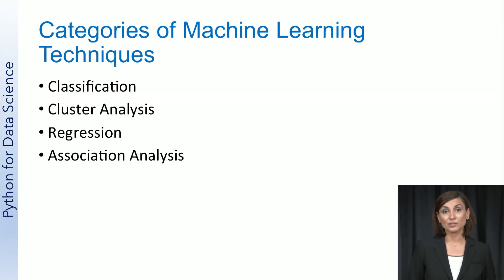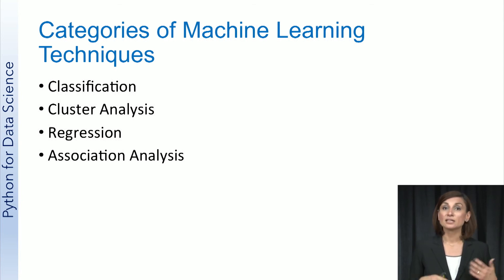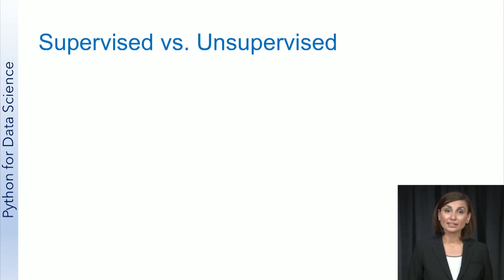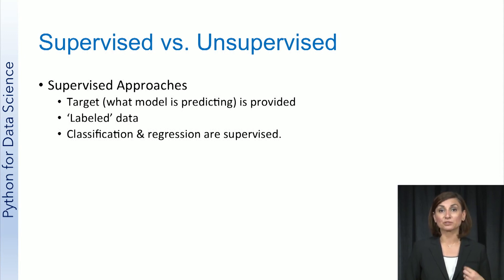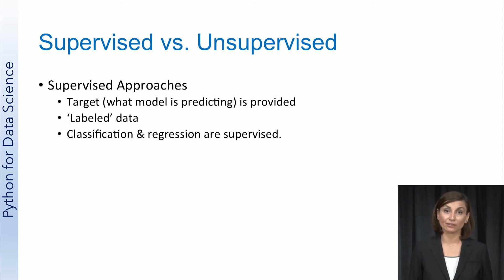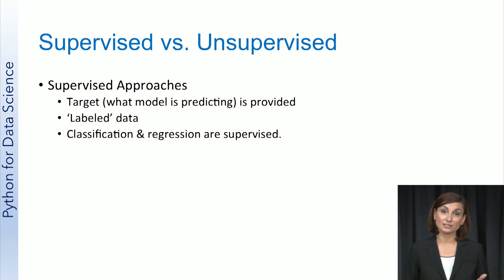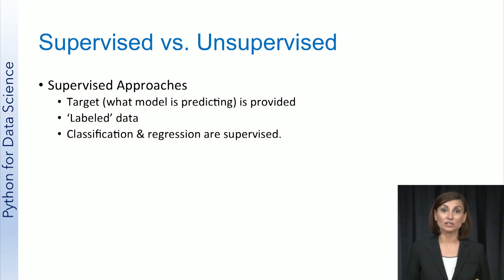We've now looked at the different categories of machine learning techniques: classification, regression, cluster analysis, and association analysis. For these techniques, there are two ways of conducting the learning itself, referred to as supervised versus unsupervised learning. In supervised approaches, the target — which is what the model is predicting — is provided. This is referred to as having labeled data because the target is labeled for every sample in your data set. For example, in predicting the weather category of sunny, windy, rainy, or cloudy, every sample in the data set is labeled as one of these four categories. In general, classification and regression are supervised approaches.